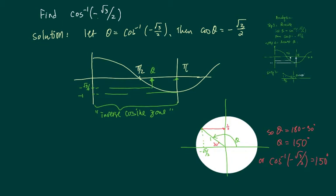Now once we have this one written this way, we can draw the cosine curve. Inverse cosine is defined between 0 to pi, and this is called the inverse cosine zone.